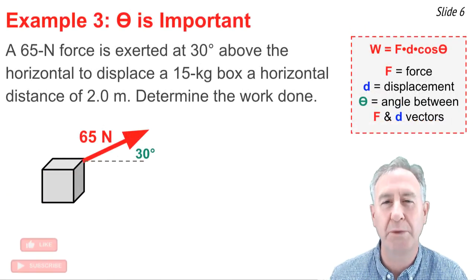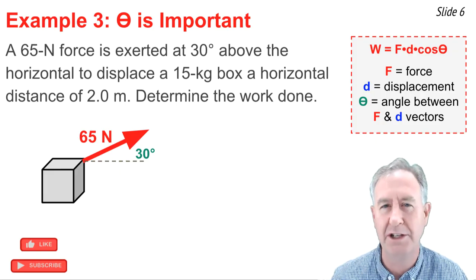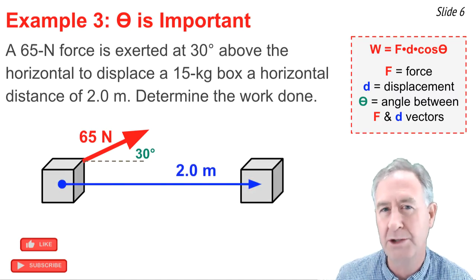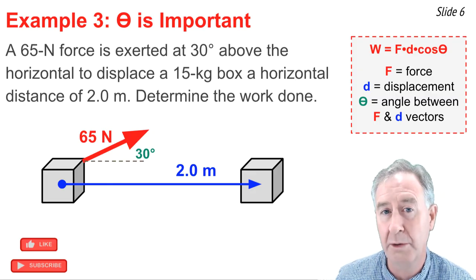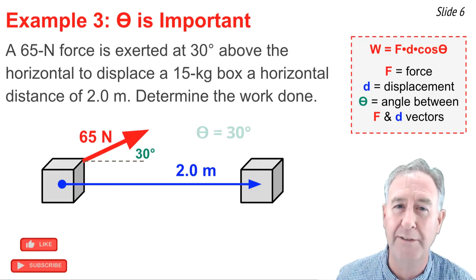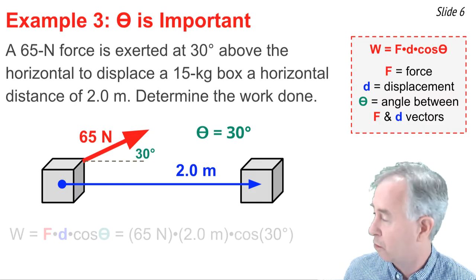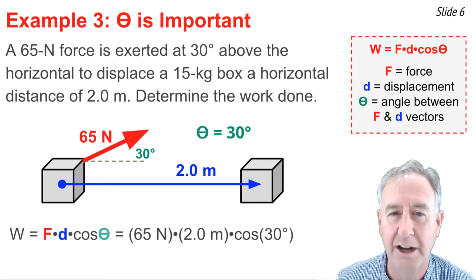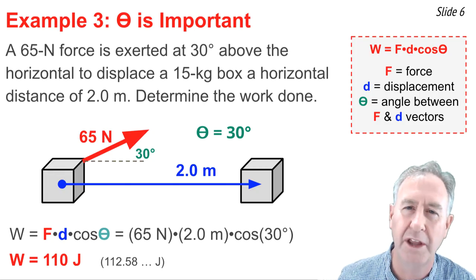In our third example, we want to know the work done when a 65-newton force exerted at 30 degrees above the horizontal displaces a 15-kilogram box a distance of 2 meters to the right. In the diagram, the force acts on the box and displaces it 2 meters to the right. Since the displacement is to the right and the force is 30 degrees above the right, the angle between F and D is 30 degrees. Substituting into the work equation: 65 newtons times 2 meters times the cosine of 30 degrees gives approximately 113 joules, or 110 joules rounded to two significant digits.